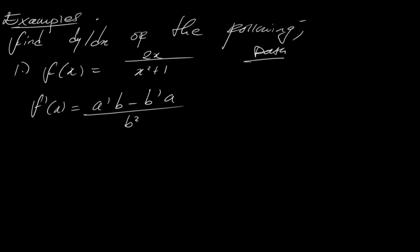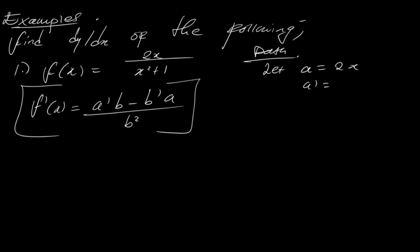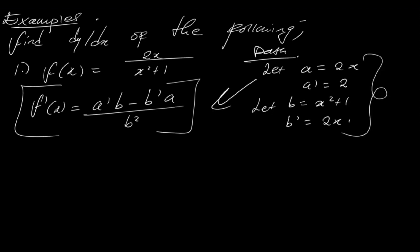Remember that a is what is on top and b is what's at the bottom. So collect data and find these separate values. Let a be equal to 2x, then find the derivative of a — so a prime is simply 2. Then let b equal to x squared plus 1. Then find b prime: b prime is equal to 2x.